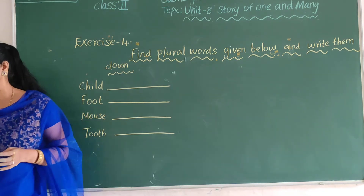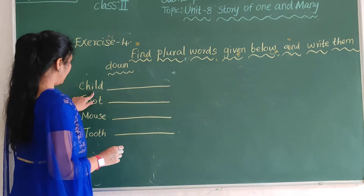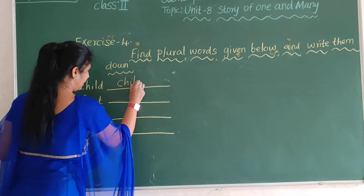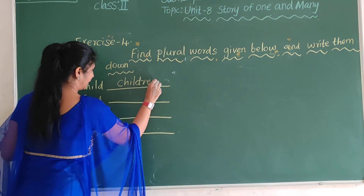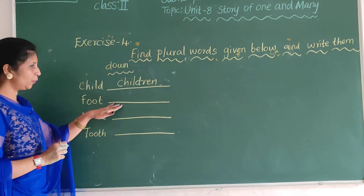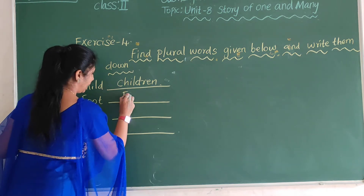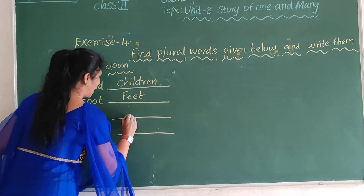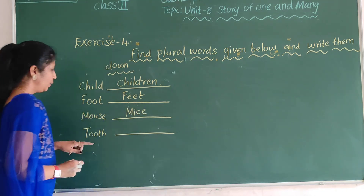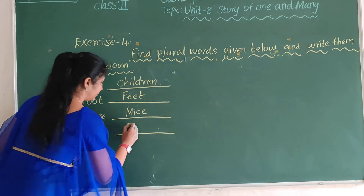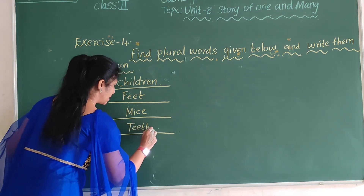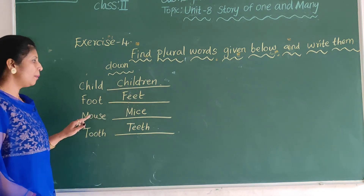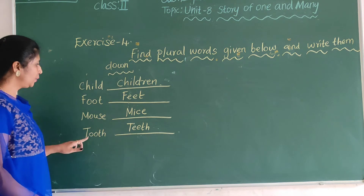With the exercise given below, children. Child — children. Foot — feet. Mouse — mice. Tooth — teeth. Okay.